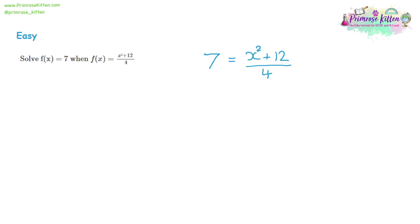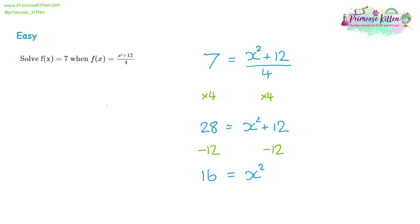All we have to do is solve the equation. I want to get x on its own. It's being squared, it's having 12 added to it, and it's all being divided by 4. It's normally easier to get rid of fractions first, so let's multiply both sides by 4. That leaves me with 28, and the divide by 4 and times 4 cancel out. Then I'm going to take away 12 from both sides: 28 take away 12 is 16. So 16 is equal to x squared. Now I need to take the square root of both sides, leaving x is equal to 4, because the square root of 16 is 4.